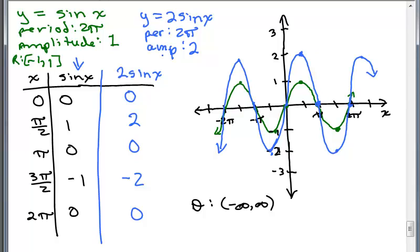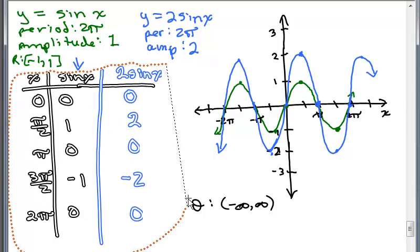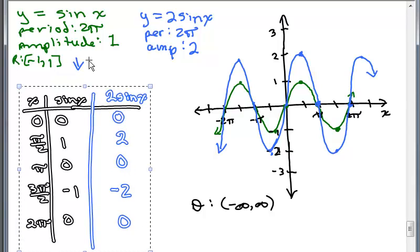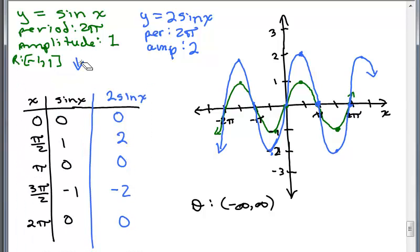So the range here, I think I'm going to have to make this a little bit smaller so we could fit this in. Here we go. A little more space. So the range of y equals 2x would be in between negative 2 and 2. So now we have y equals sine of x. Now we've graphed y equals 2 sine of x.